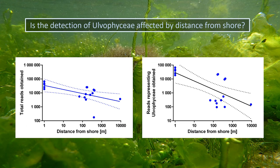The abundance of tufA reads obtained with our methodology decreased significantly with increasing distance from shore. The trend is particularly obvious when we look exclusively at reads representing Ulvophyceae in the right-hand graph. They decreased from approximately 30,000 reads per sample at a distance of 1 meter from shore to only approximately 300 at a distance of 10 kilometers from shore — a factor of 100.